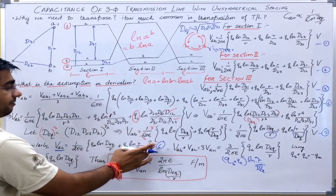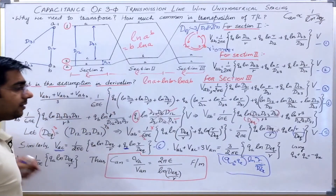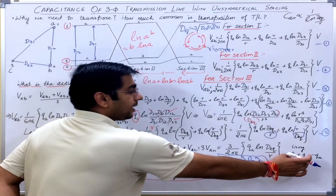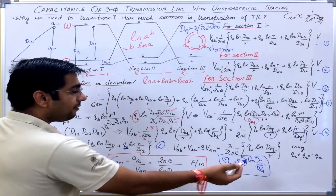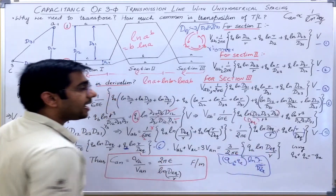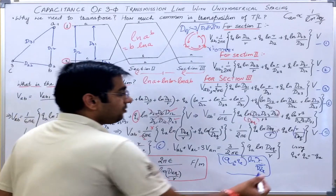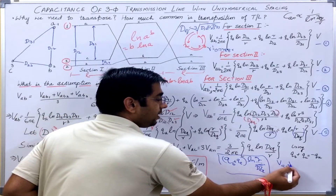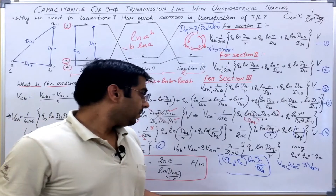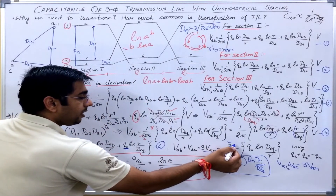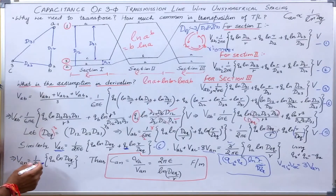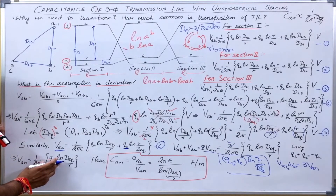Adding equations 5 and 6 (V_AB + V_AC), the term ln(R/D_eq) is common, so Q_B + Q_C appears. Since Q_A + Q_B + Q_C = 0, we have Q_B + Q_C = −Q_A. Taking this minus sign inside the logarithm inverts it. So V_AB + V_AC = 3·Q_A·ln(D_eq/R) / (2πε). From the previous video, V_AB + V_AC = 3·V_AN, so after cancelling the 3, V_AN = 1/(2πε) · Q_A·ln(D_eq/R).